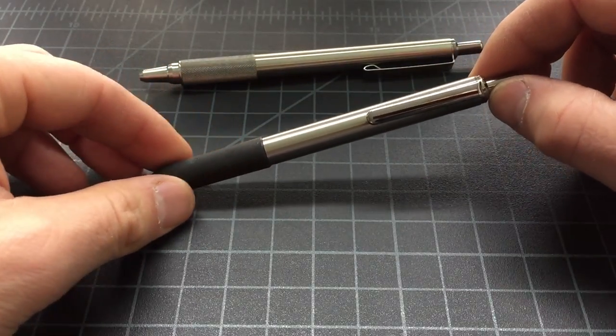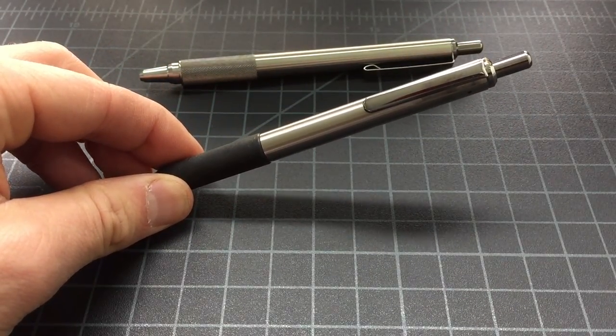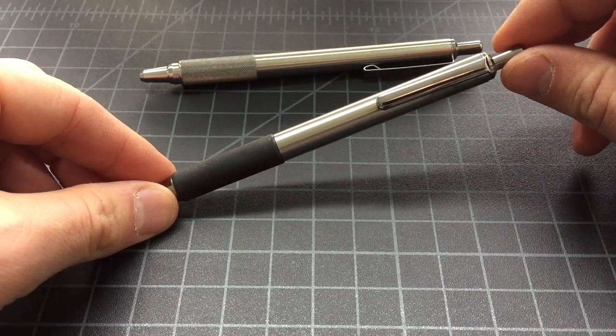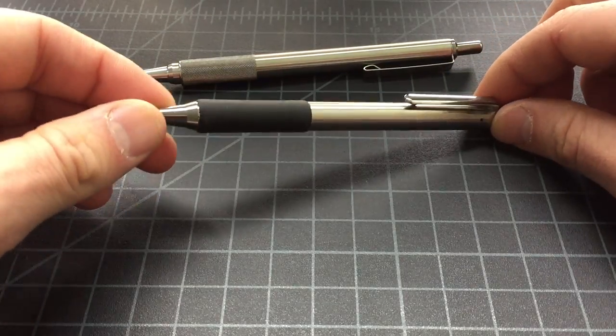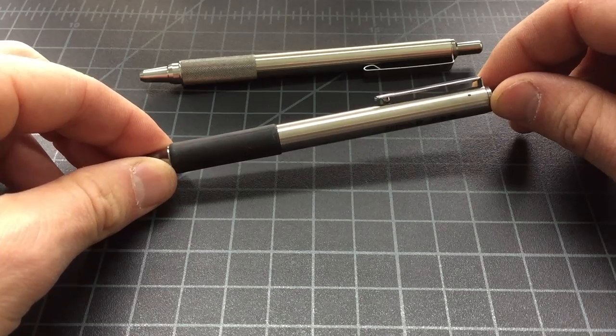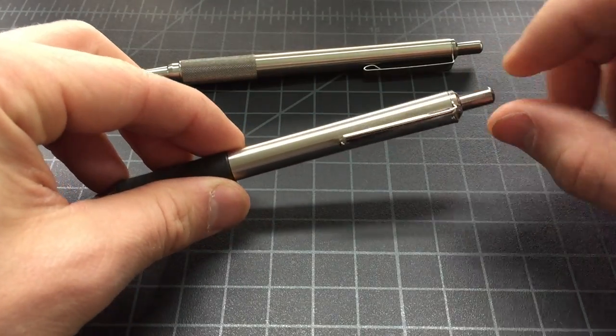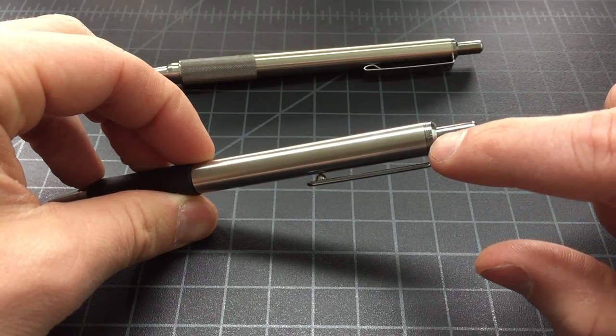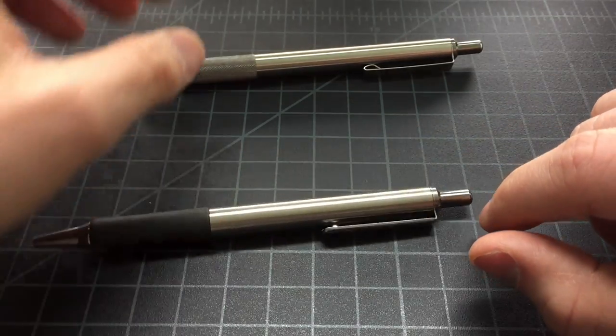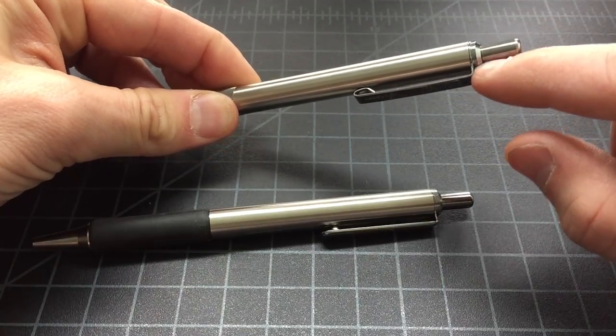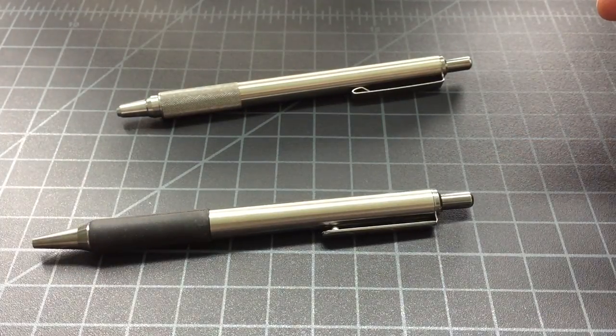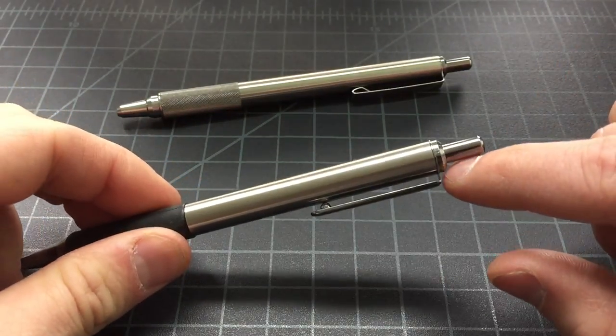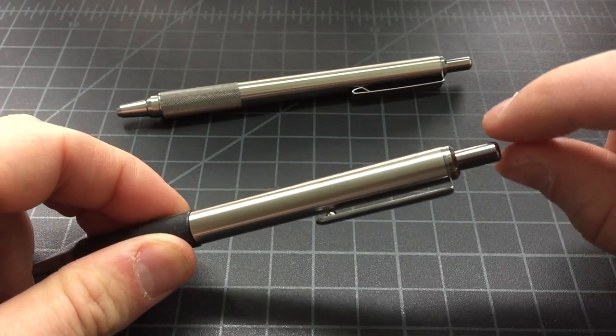This is the Zebra F402. This is about $7 for a two pack and it's not quite as nice. But the funny thing about the 402 is it has a brass button assembly, whereas the F701 uses a plastic one.